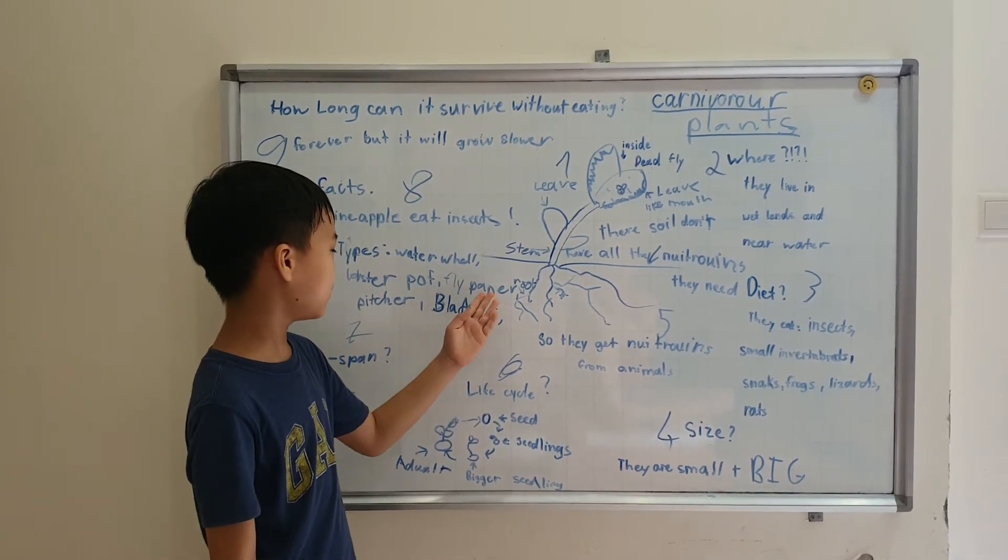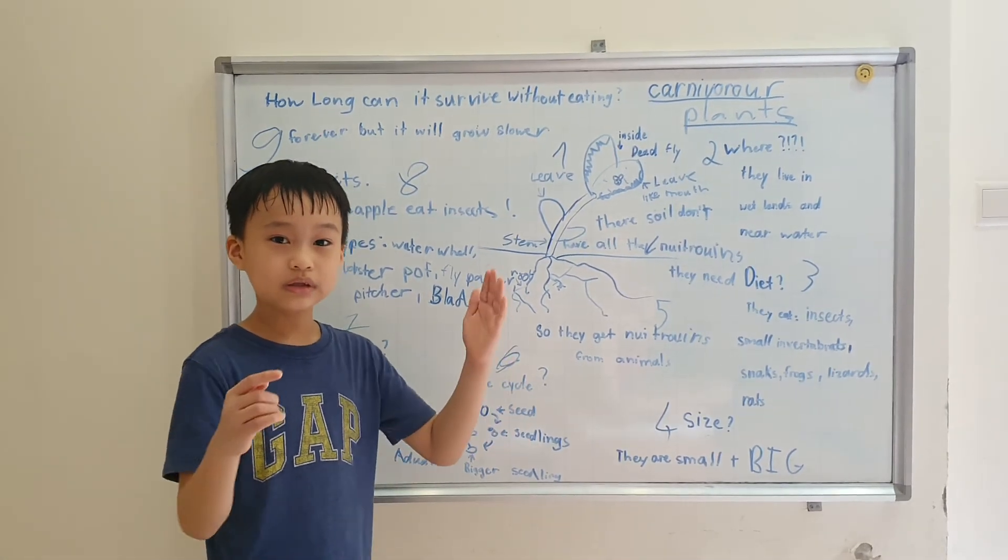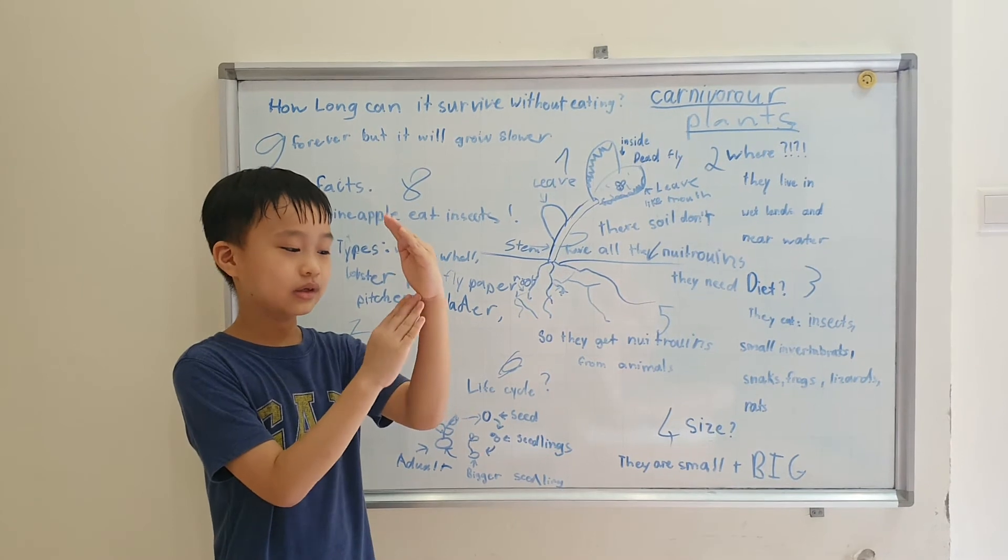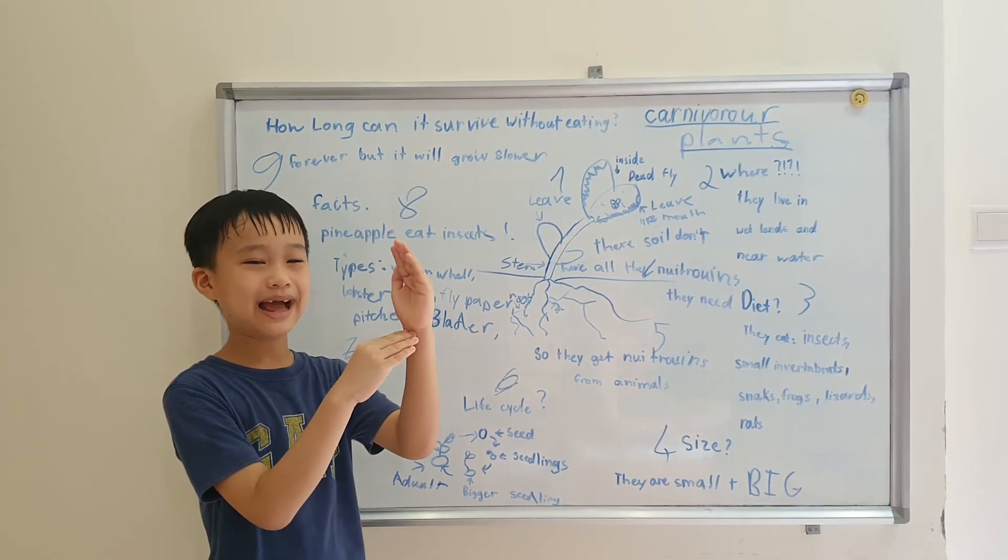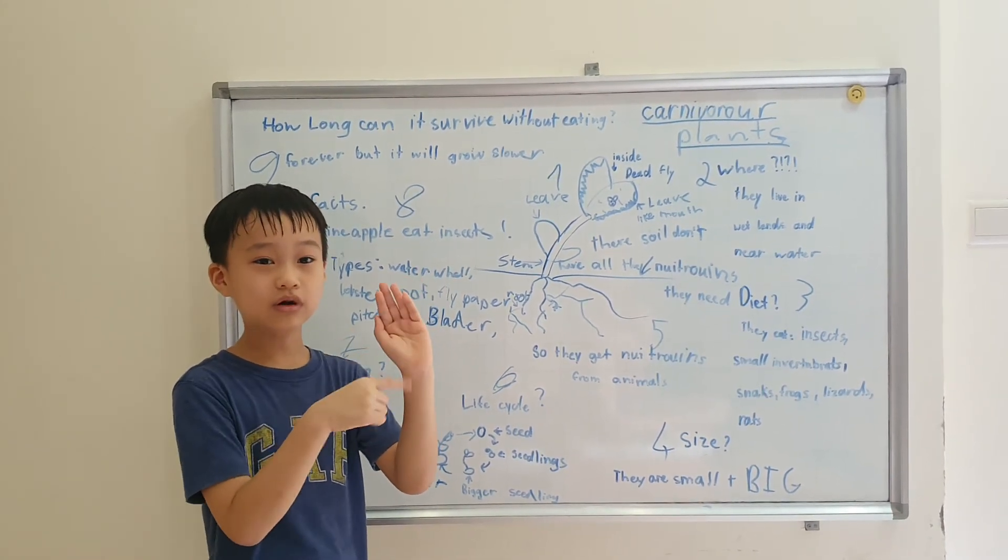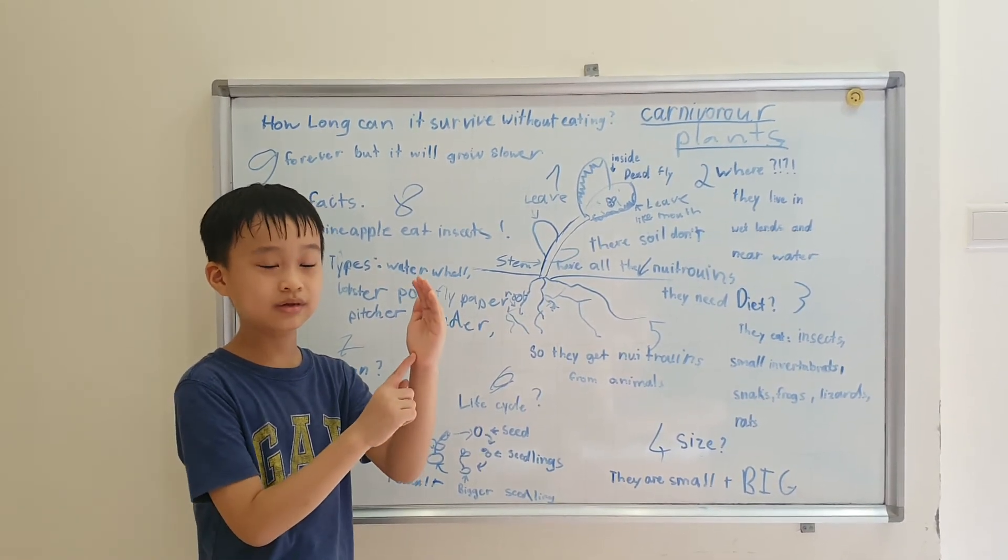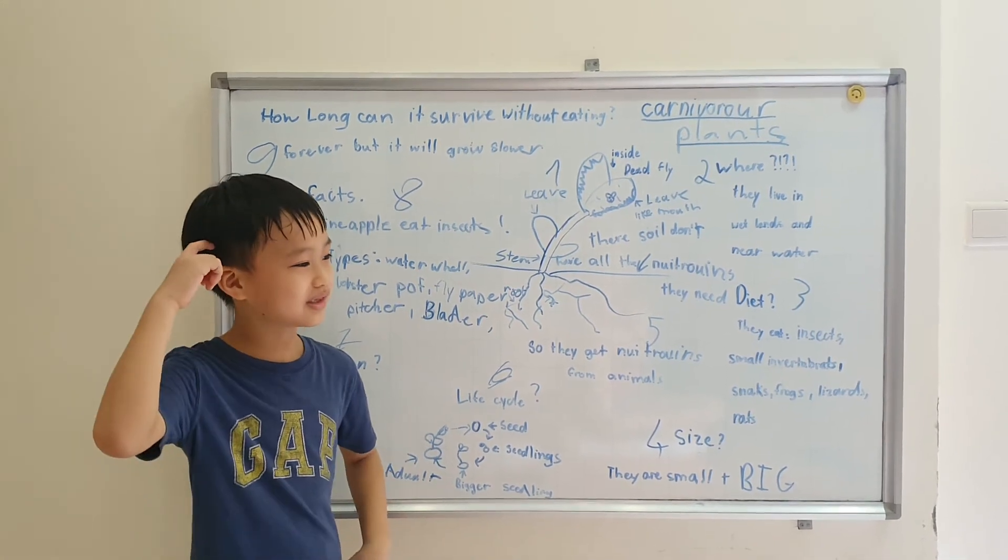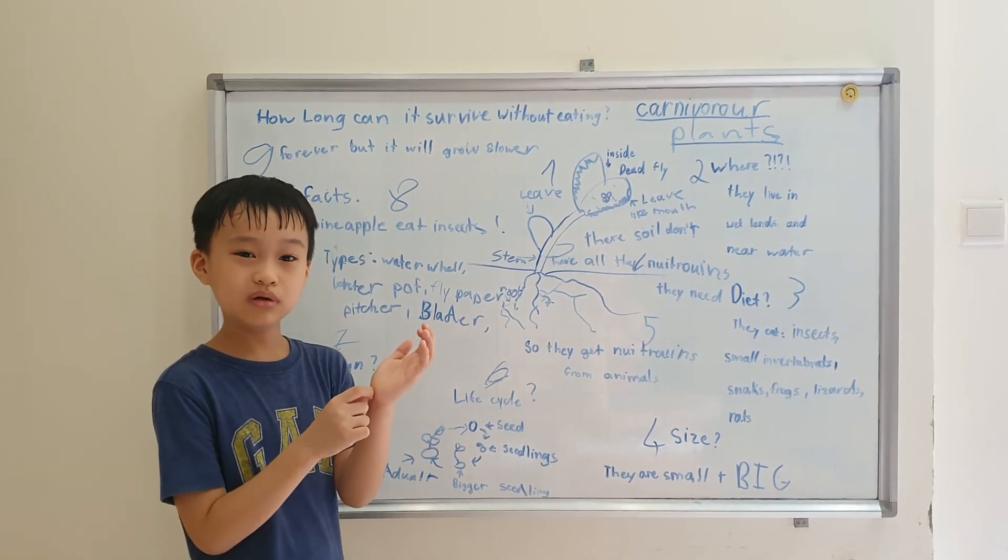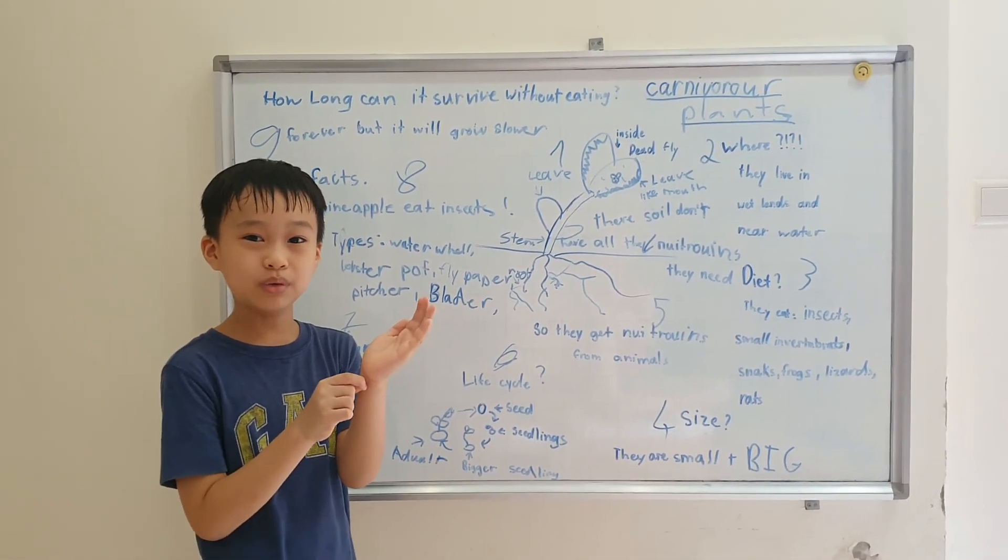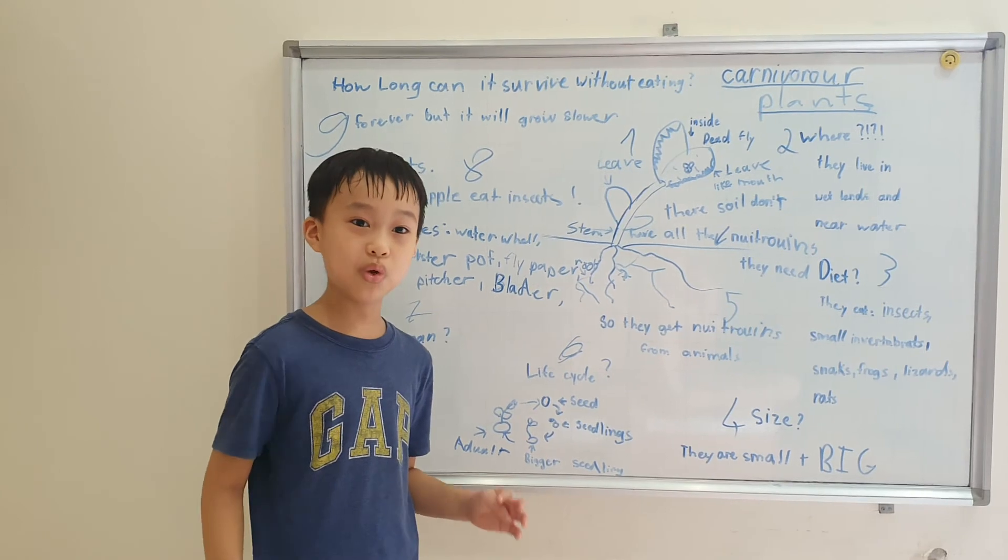I also want to tell you about pitcher plants and bladders. Pitchers work like this: they have some that have a leaf-like lid over here. There will be nectar around the pitcher so the insect will go around drinking the nectar. But inside the nectar there's a substance that makes it slippery and it will fall down and get digested. And it will get digested with bacteria.